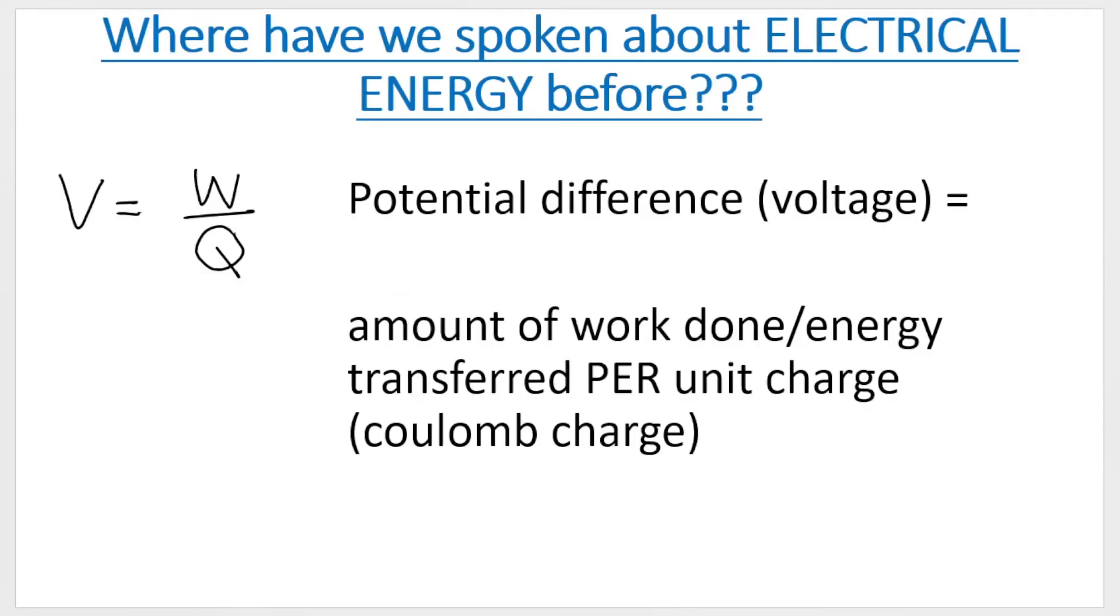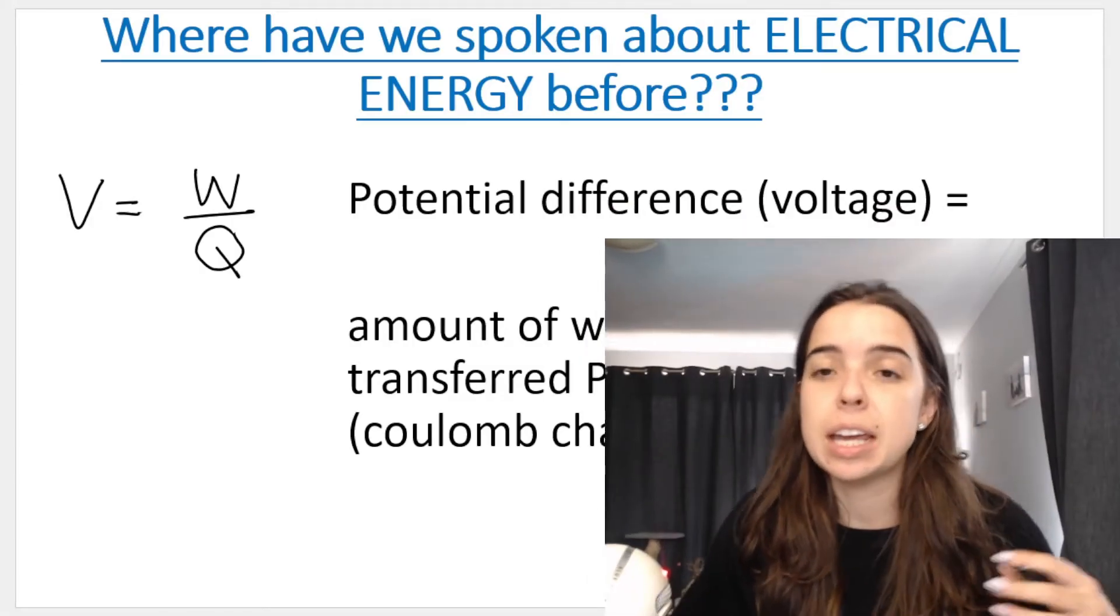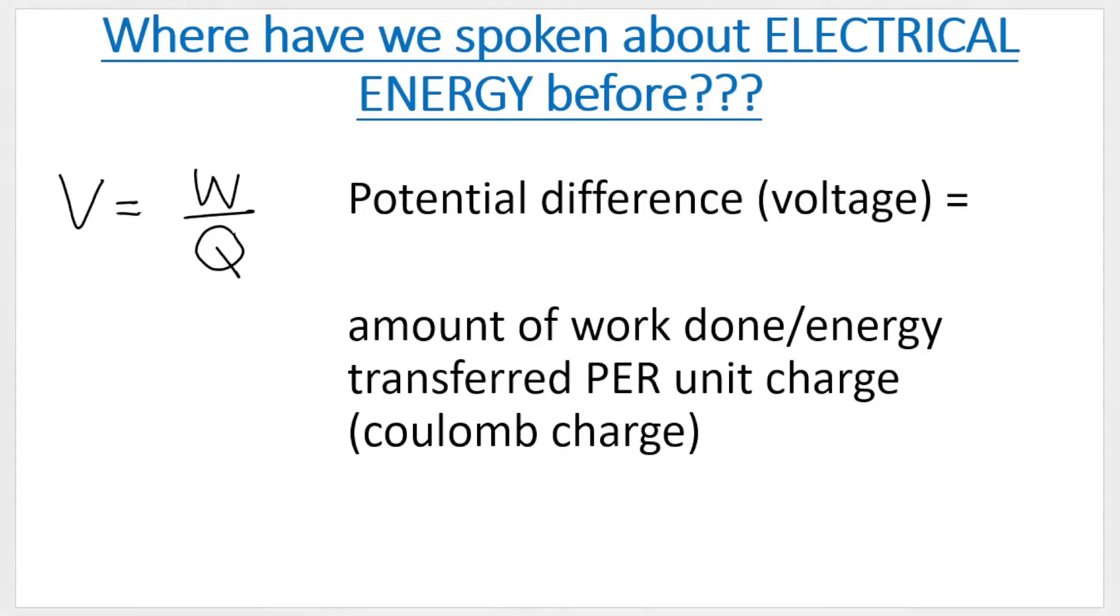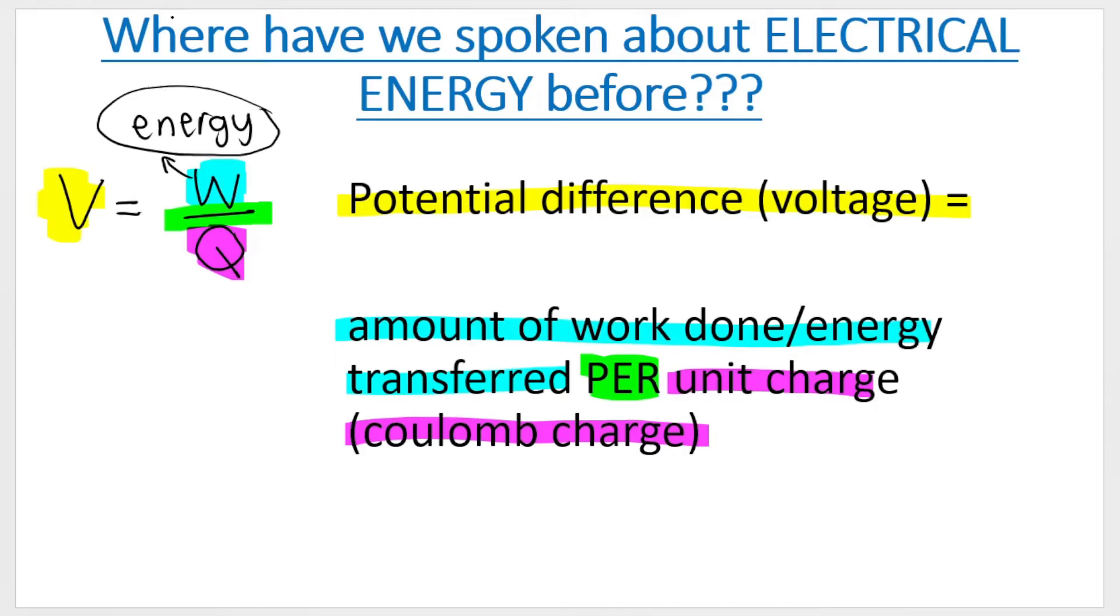Now where have we spoken about electrical energy before? We've definitely spoken about this in the context of circuits before and it was with this formula over here. V is equal to W over Q. Remember V is potential difference. So potential difference or voltage is equal to the amount of work done or energy transferred, W, per unit charge or per coulomb charge. I want to emphasize that although it says W in this formula, this is the same thing as energy transferred.